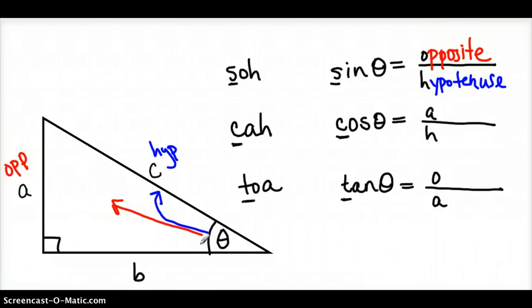Here, CAH, the A stands for adjacent. Adjacent is just a fancy word meaning next to. So the leg, and the adjacent is always the leg because it can't be the hypotenuse. So cosine is the adjacent, it's the ratio of the adjacent side over, H again is the hypotenuse. And then TOA, tangent, is the opposite over the adjacent.